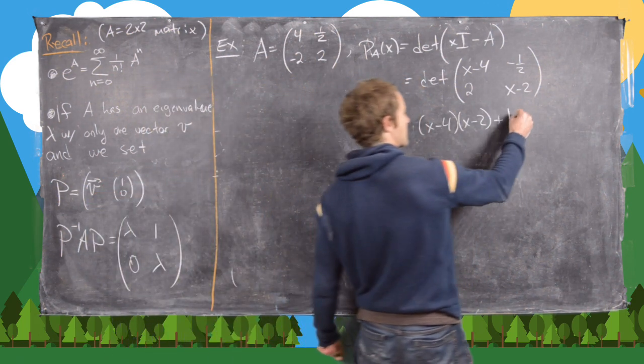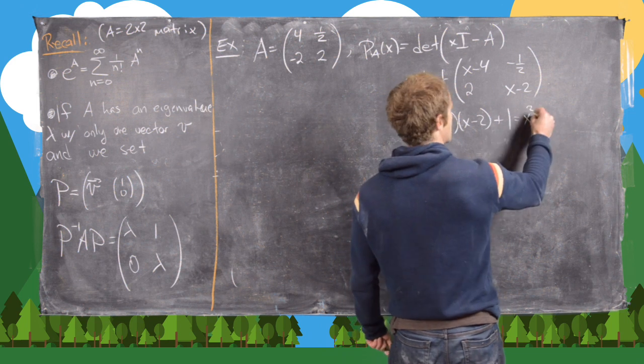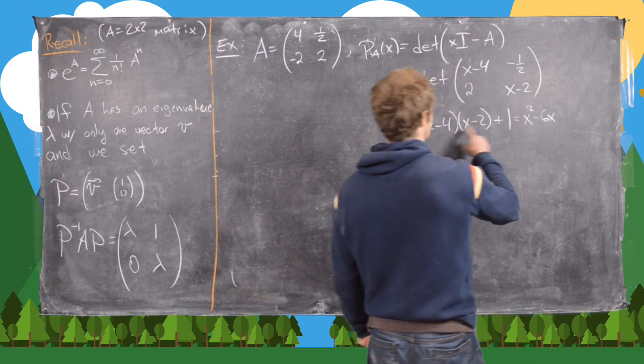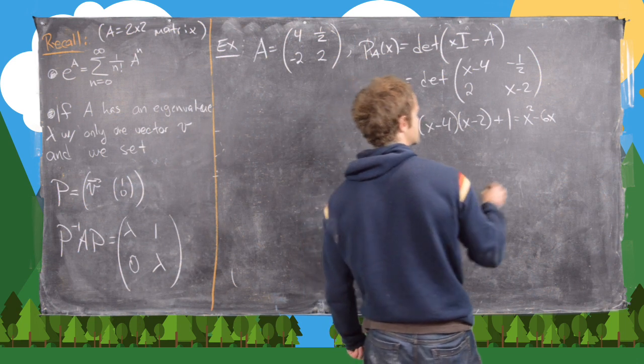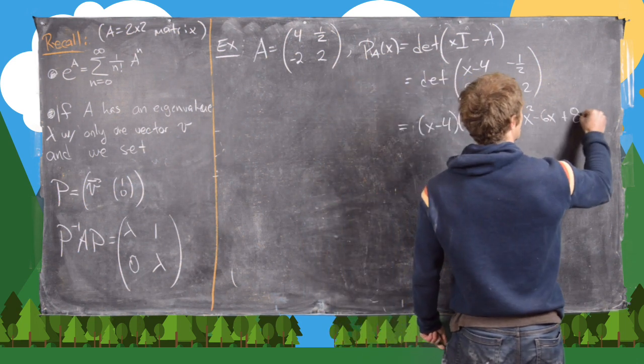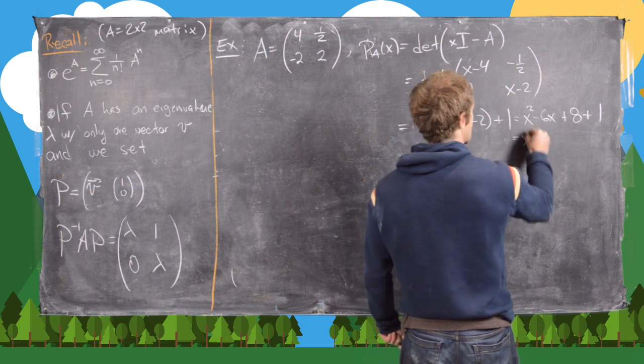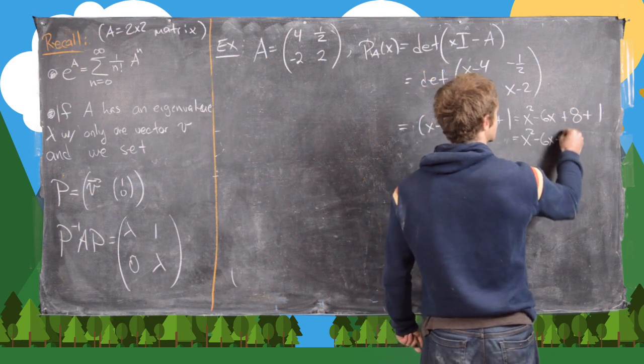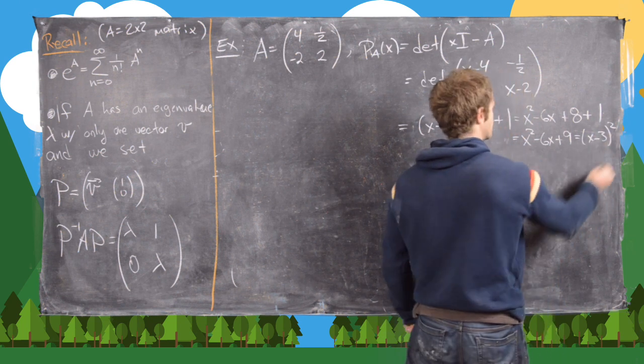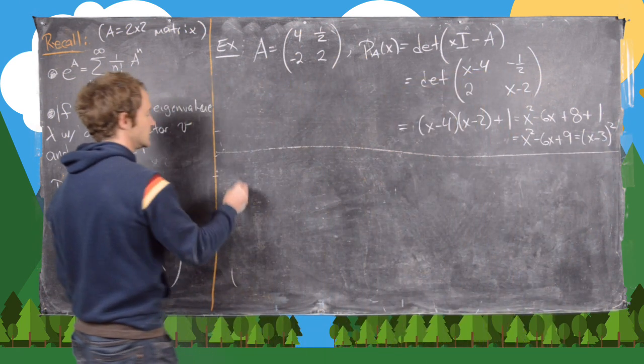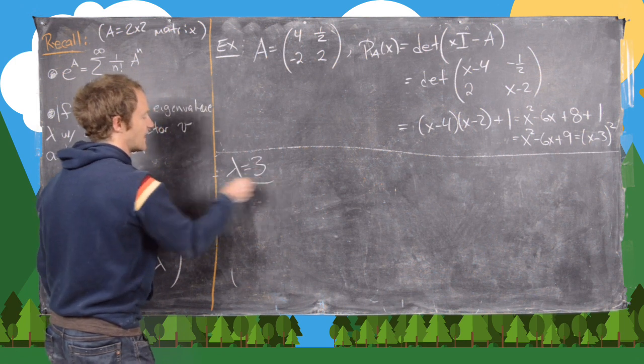Okay, let's foil this out. So we get x² - 6x, and then plus 8 plus 1. So that gives us x² - 6x + 9. Notice that's (x-3)². So that tells us that our eigenvalue is 3.